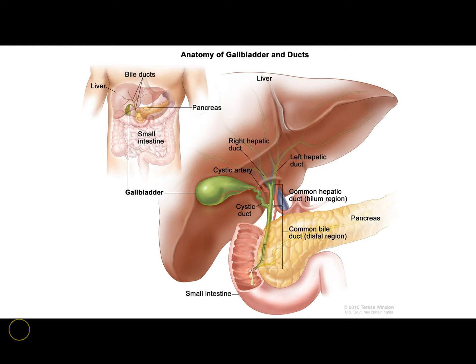Let's start with a quick reminder about anatomy and why we care. The gallbladder is an organ that sits in the right upper quadrant of the abdomen. It is where your digestive juices tend to be stored. During the process of digestion, the gallbladder will empty through the cystic duct into the common bile duct, and it will empty into the small intestine and help with digestion.